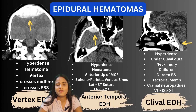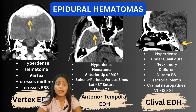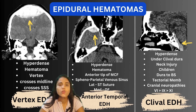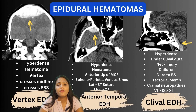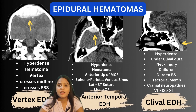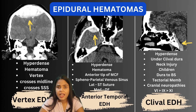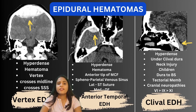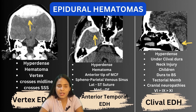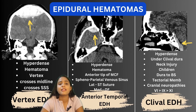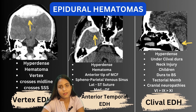The third is a clival EDH, which is very subtle. There is a collection under the clival dura, usually seen in children following a hyperflexion or hyperextension neck injury. These are limited by the attachment of the dura to the basisphenoid and the tectorial membrane. Importantly, clival EDHs can cause multiple cranial neuropathies — most commonly the sixth nerve, followed by the ninth and eleventh.